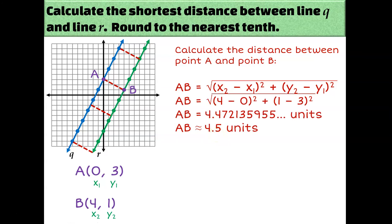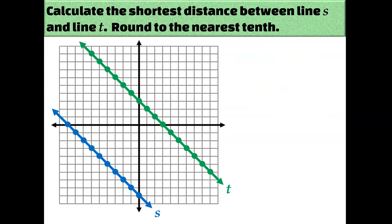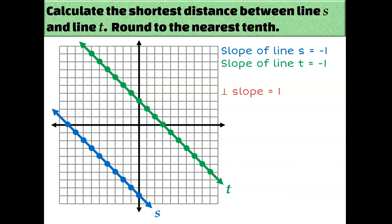All right, pretty easy. Let's try another one. This time our lines are parallel — both of them have a slope of negative one, which means the perpendicular slope would be positive one. So again, pick any point you want to on either line and count according to a one-over-one slope.